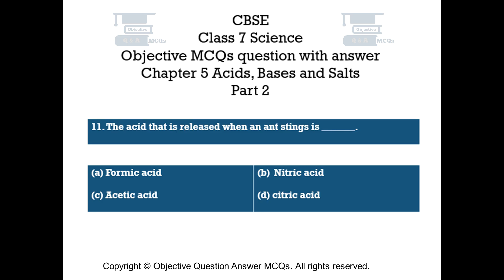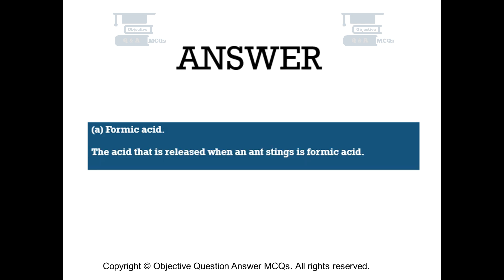Question number 11. The acid that is released when an ant stings is — Option A: formic acid. Option B: nitric acid. Option C: acetic acid. Option D: citric acid. The right answer is option A — the acid released when an ant stings is formic acid.